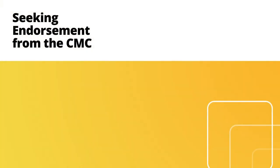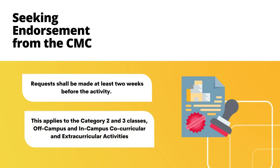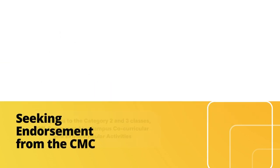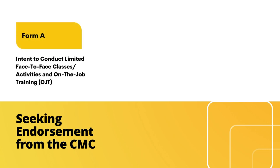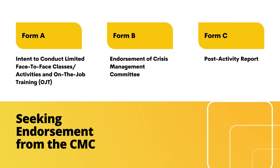Seeking endorsement from the CMC shall be done by the requester at least two weeks before the activity. This applies to Category 2 and 3 classes, and off-campus and in-campus co-curricular and extracurricular activities. There are three forms to be accomplished: Form A — Intent to Conduct Limited Face-to-Face Classes or Activities and On-The-Job Training (OJT); Form B — Endorsement of Crisis Management Committee; and Form C — Post-Activity Report. The requester shall fill out Forms A and B and ensure that all requirements are complete.